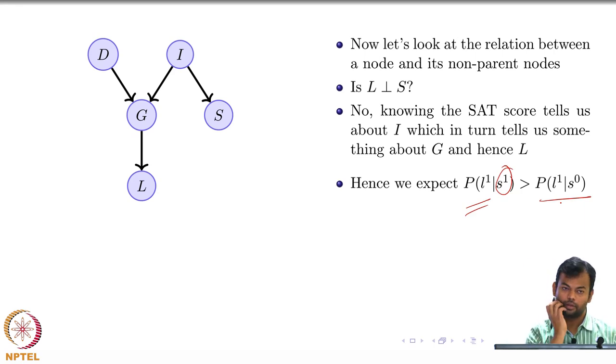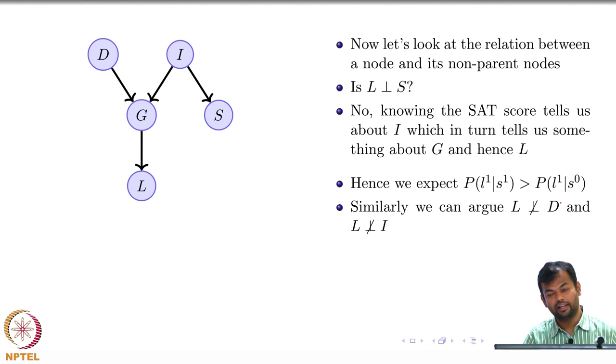This is exactly because SAT score tells you something about intelligence, which propagates back to the recommendation. Similarly, L is not independent of D and L is also not independent of I. Knowing the intelligence tells you something about the grade and hence about the letter.